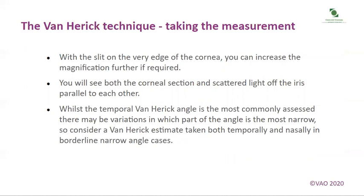With the slit on the very edge of the cornea, you can increase the magnification further if required. You will see both the corneal section and scattered light off the iris parallel to each other. Whilst the temporal Van Herrick angle is the most commonly assessed, there may be variations in which part of the angle is the most narrow, so consider a Van Herrick estimate taken both temporally and nasally in borderline narrow angle cases.